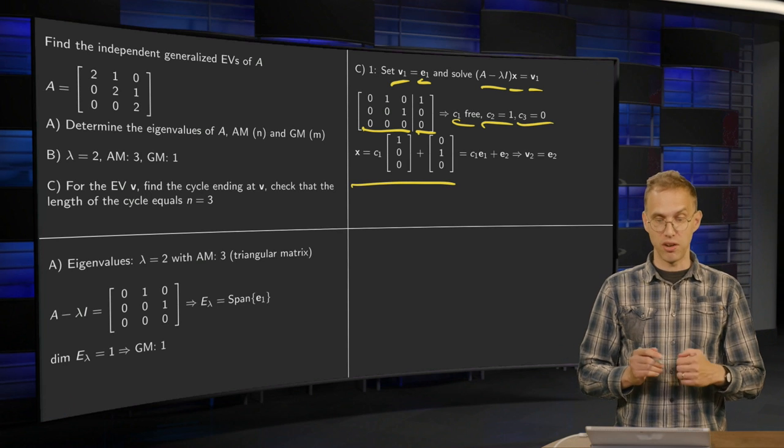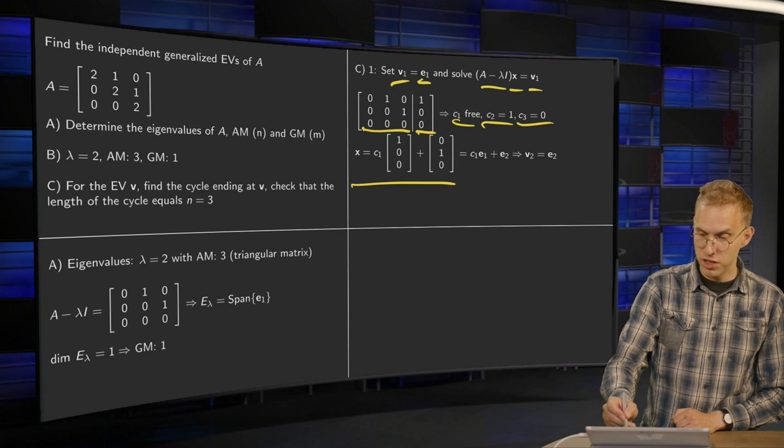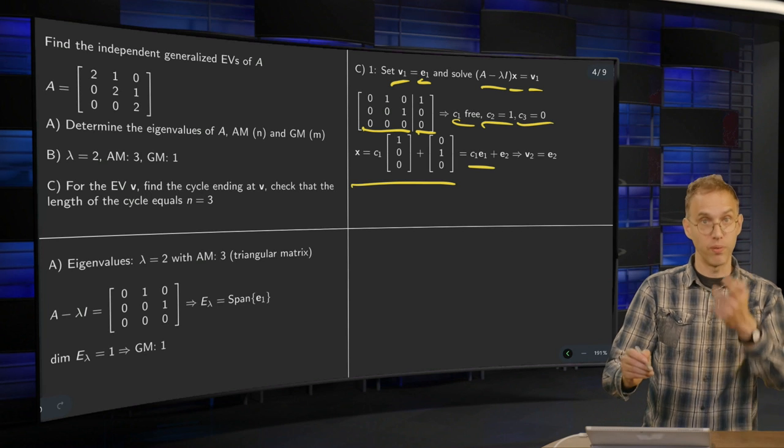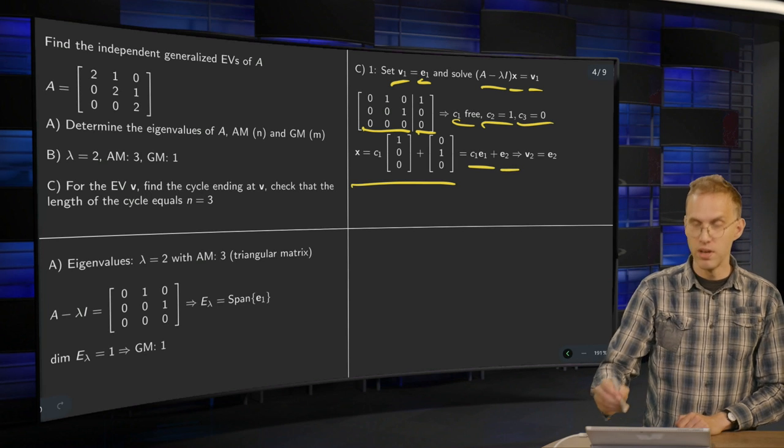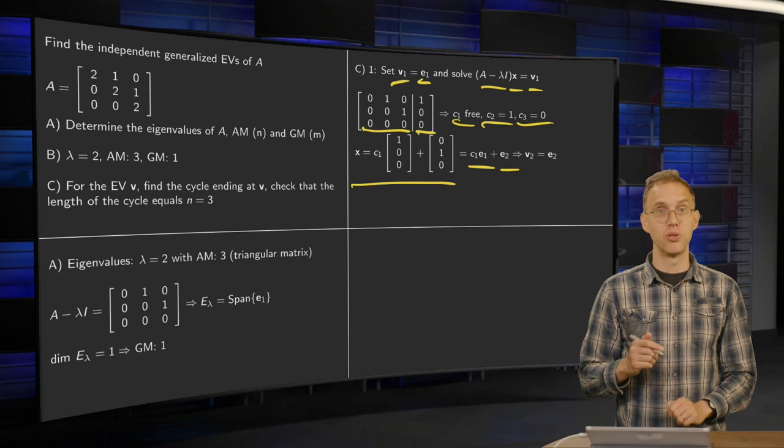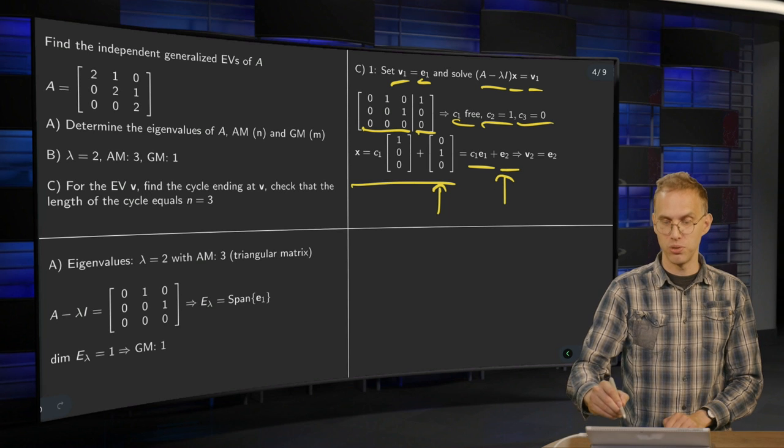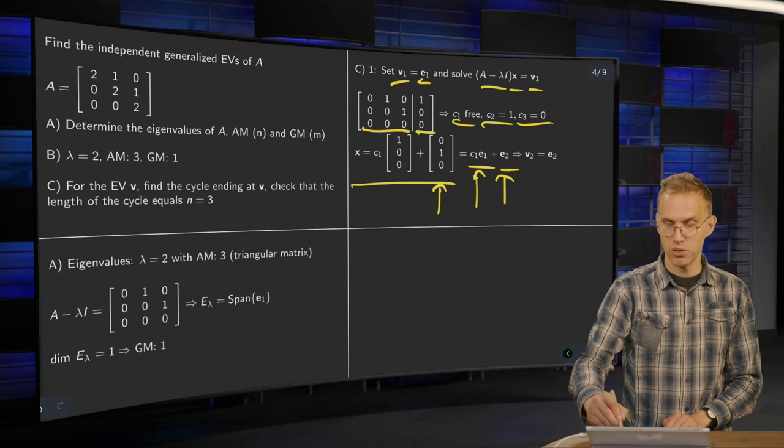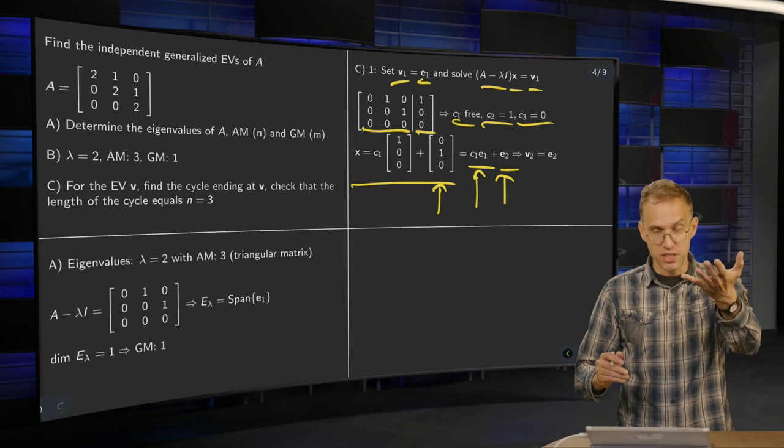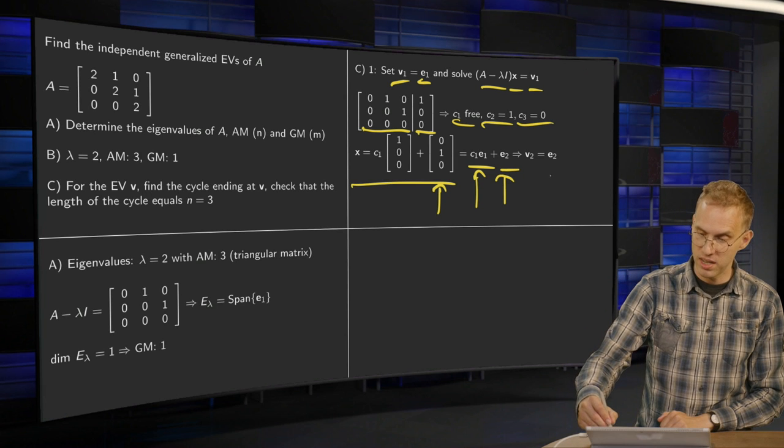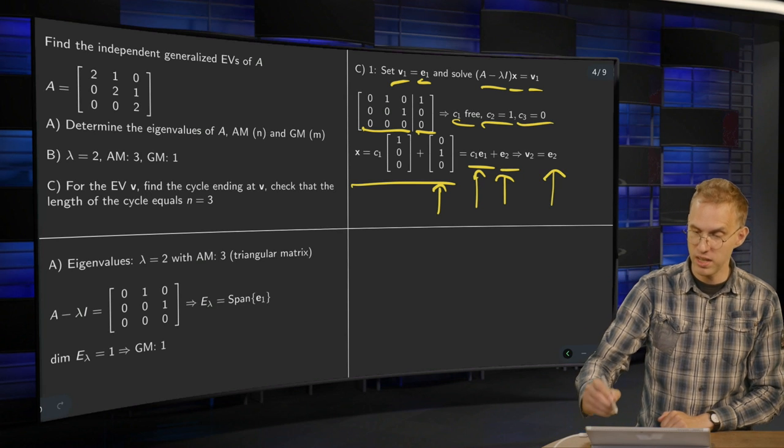So we see our solution x equals C1 times 3 times E1, what we already had, plus E2. So our particular solution now is this E2 equals 0, 1, 0. So this is our particular solution. This is the homogeneous solution. So the second generalized eigenvector is the particular solution, E2.